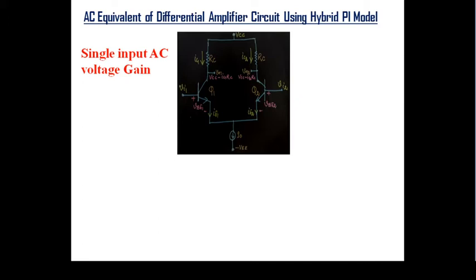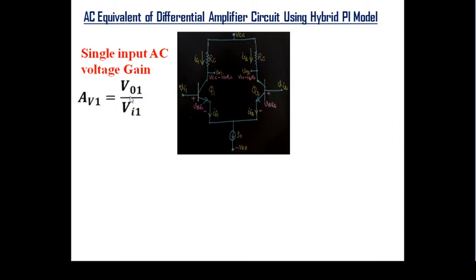For the single-input AC voltage gain, as the name suggests, we give input at one base of transistor Q1, and the other base of transistor Q2 is grounded. The output voltage is V_out1, and the voltage gain AV1 equals V_out1 divided by VI1. We need to find this AC voltage gain using the hybrid pi model.